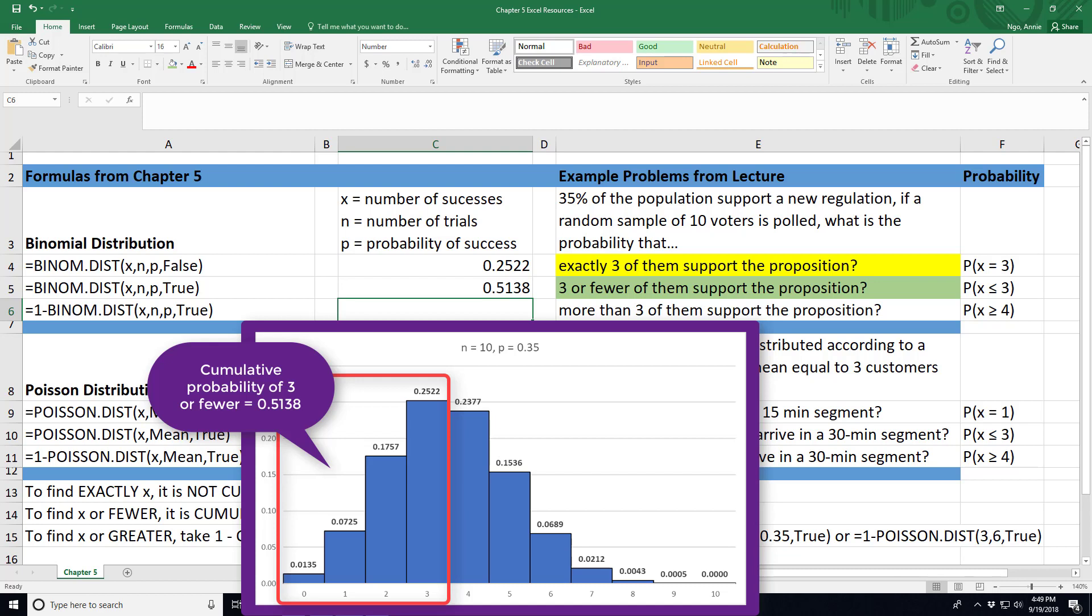So recall that with Excel and with our binomial distribution or any distribution, it reads from left to right. So as we do cumulative, you're adding up the probabilities starting from 0 and up to whatever number you're interested in.